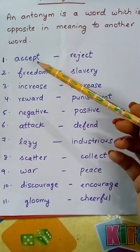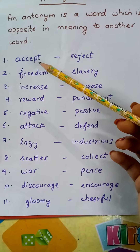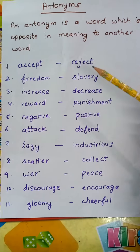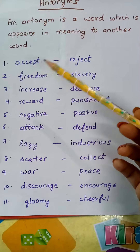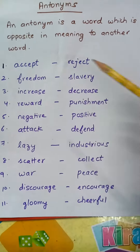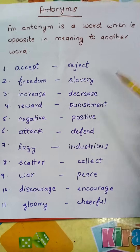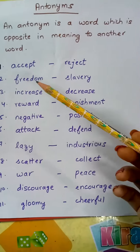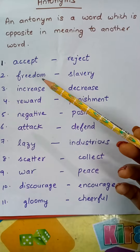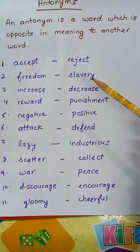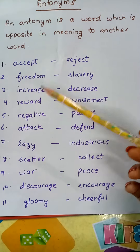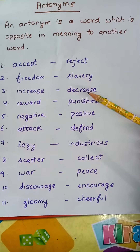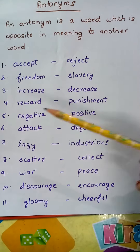First is accept — reject. Accept, you know what is accept? Svikaar karna — reject karna aur svikaar karna. Freedom — ajaadi; slavery — gulami. Increase — you know increase, badhna; decrease — ghatna.